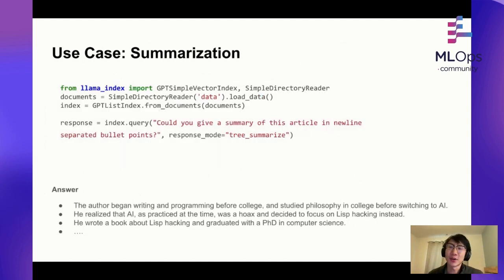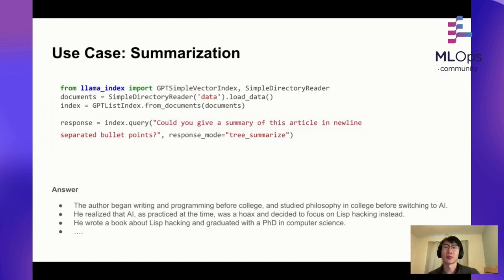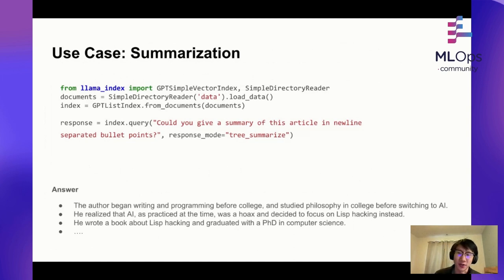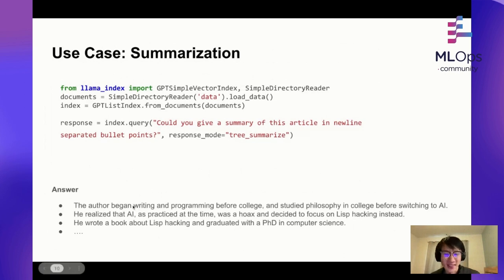There's also summarization, which is a bit different — instead of doing top-k retrieval, you actually want to go through all the context in a document to synthesize a final response or summary. We load in documents and use a data structure called the list index. Instead of storing each node with an embedding, a list index creates a flat data structure of all nodes within a document, so that when you ask any query, it explicitly goes through every node to use as context to generate the final response. For example, you can ask 'give me a summary of this article in newline-separated bullet points.'